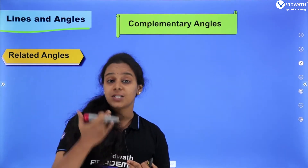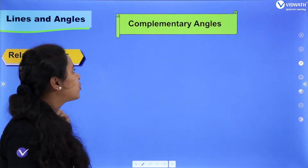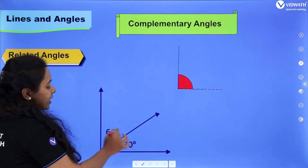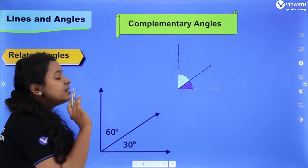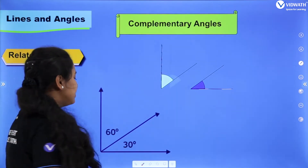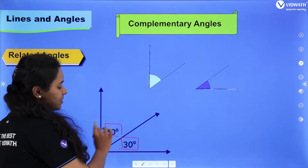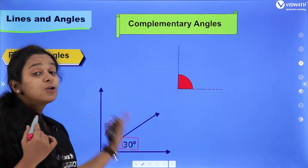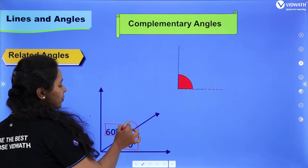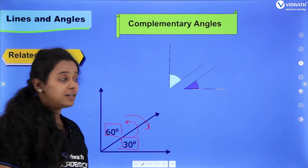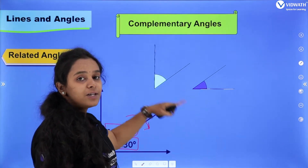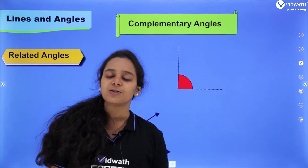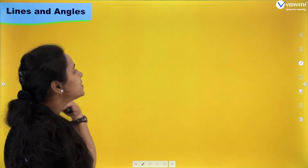The next concept is complementary angles. If two angles sum to 90 degrees, they are called complementary angles. Here, 60 plus 30 equals 90 degrees. So 30 is the complement of 60 and vice versa. Any two angles whose sum equals 90 degrees are called complementary angles.